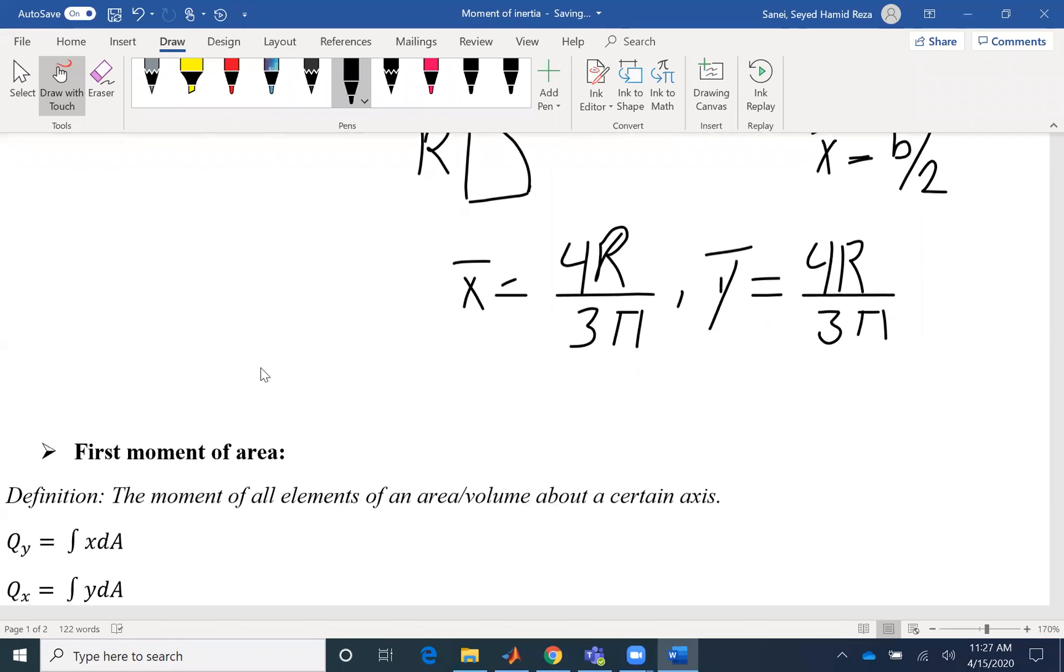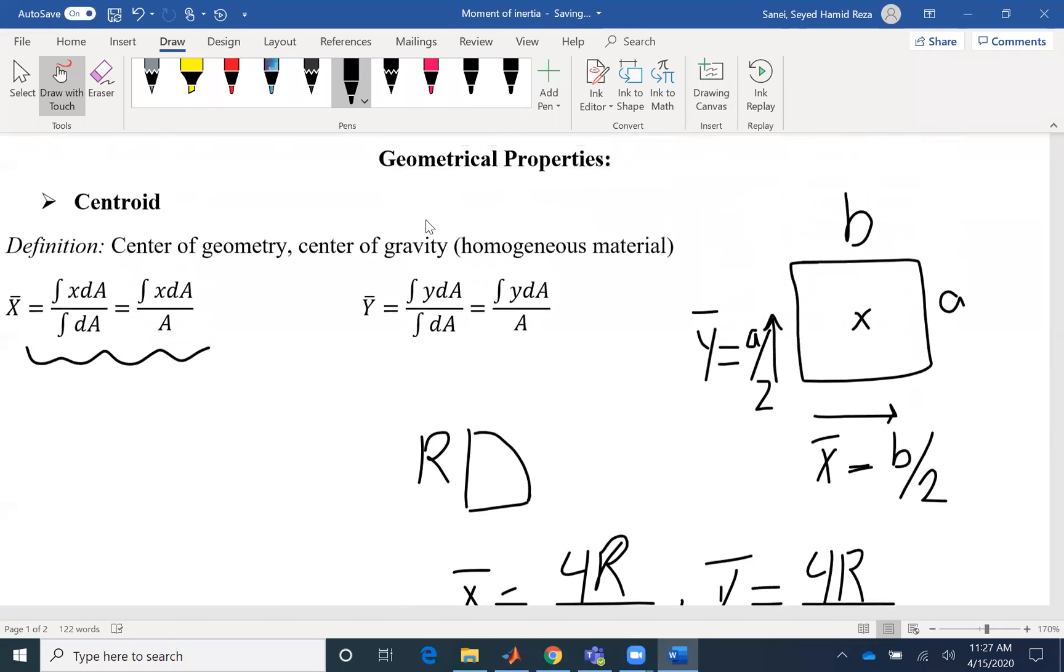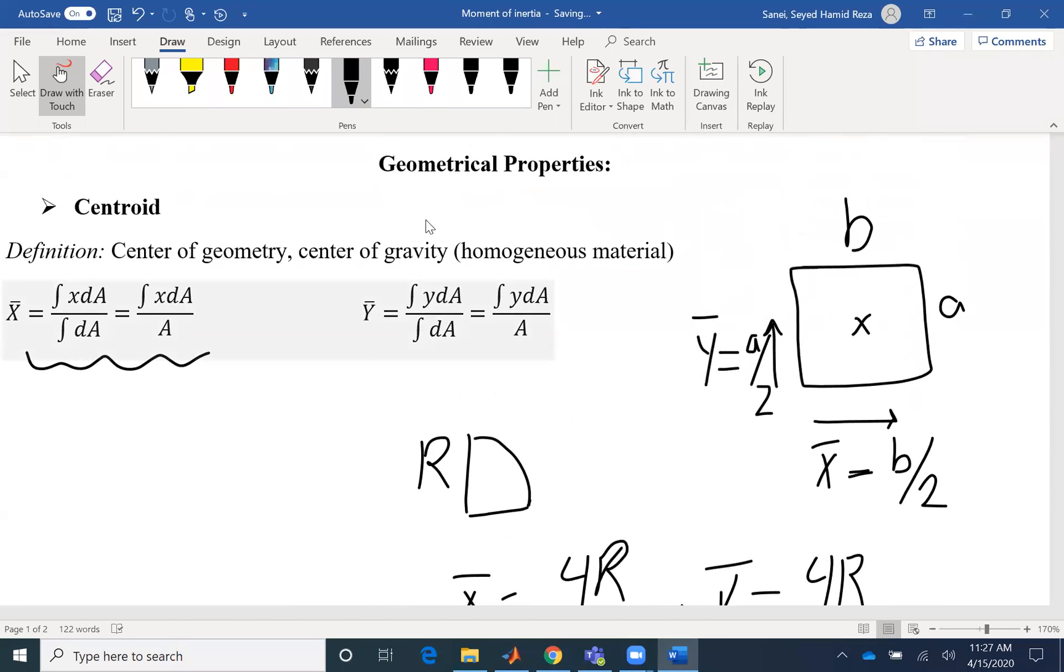The other geometrical parameter that we have is first moment of area, and that's defined as the moment of all elements of the area or volume about a certain axis. And we define it as integral of X dA, or we can write it as X bar A or Y bar A.